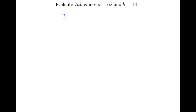We have a equals 62 and b equals 14. A lot of times what throws people off is: what does it mean to just have 7ab without anything in between these numbers and letters? The answer is, if you ever see letters next to each other with nothing between them, or a number next to a letter with nothing between them, that always indicates multiplication. If there's any other operation — addition, subtraction, division — you will see a symbol between the numbers and letters.